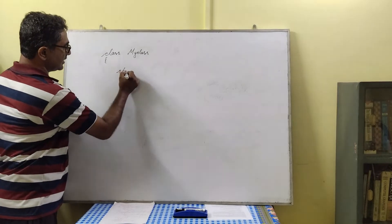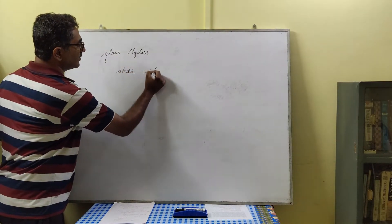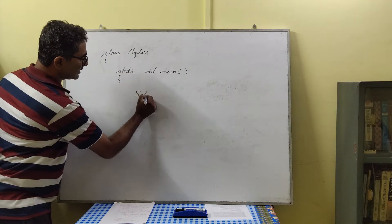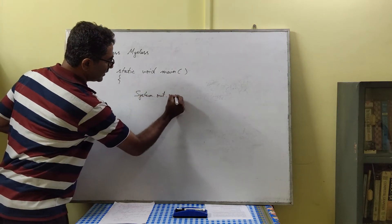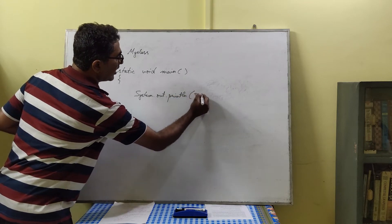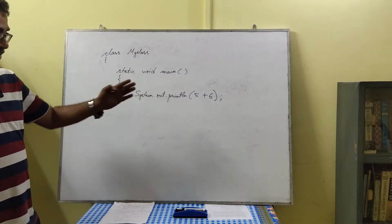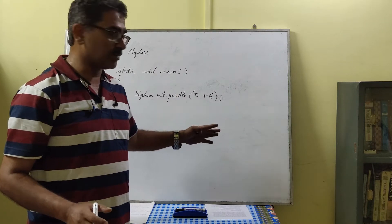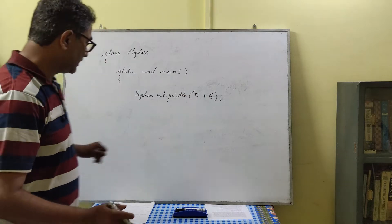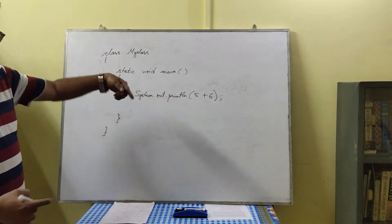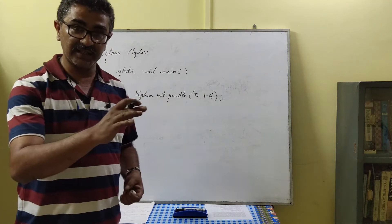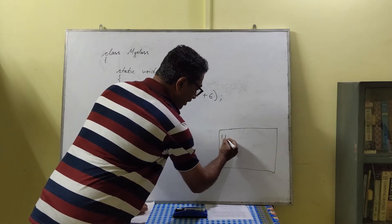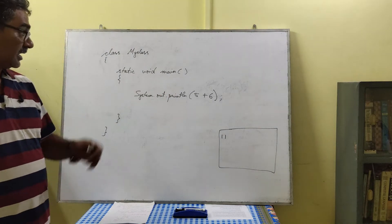For example, if we write system.out.println with 5 plus 6 — note that 5 plus 6 is not enclosed within quotation marks. This means Java is going to evaluate the expression. When we execute this program, the terminal window will display 11, because 5 plus 6 equals 11.